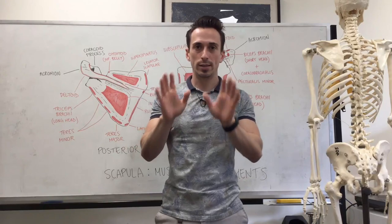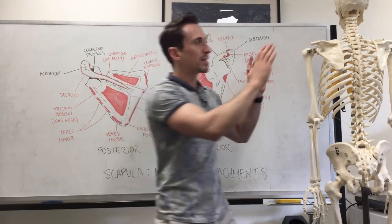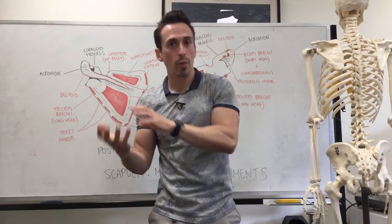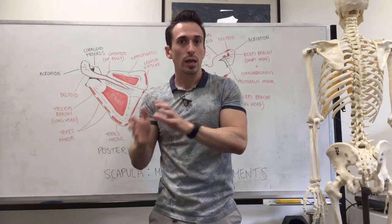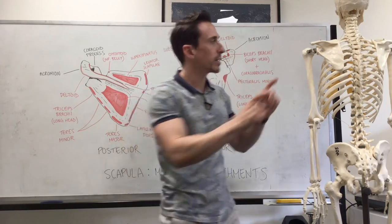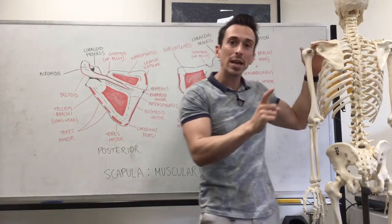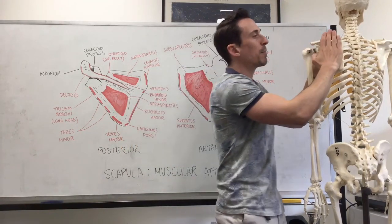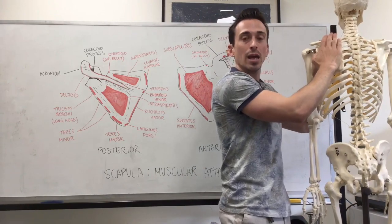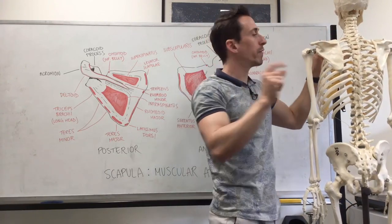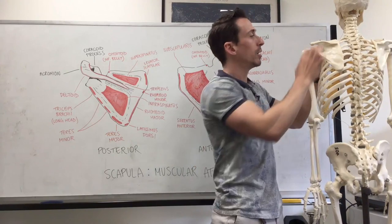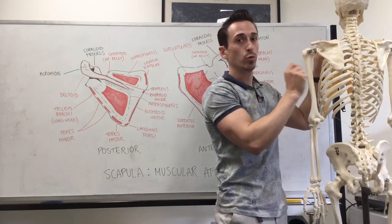An important point is this: the scapula and its stability and movement or motion is only important in the context of the glenohumeral joint, meaning scapular stability and motion is only there to provide an optimal position for the glenohumeral joint.